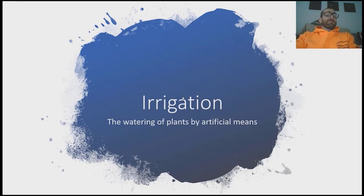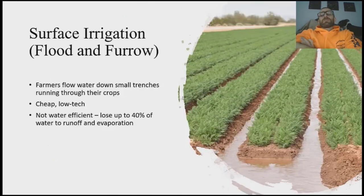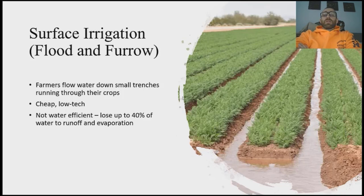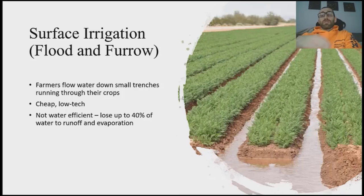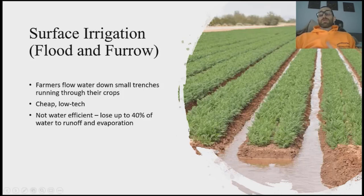That brings us to irrigation — the watering of plants by artificial means. We have a lot of different types. Starting with surface irrigation, sometimes called flood and furrow irrigation: this is probably the oldest type, it's cheap and low tech, and essentially farmers are flooding their fields, particularly through small trenches built into the field. However, it's not water efficient — you can lose up to 40% of your water to either runoff or evaporation.